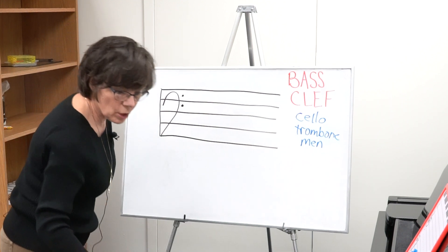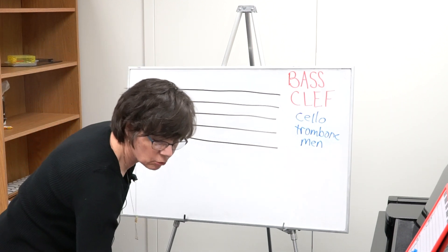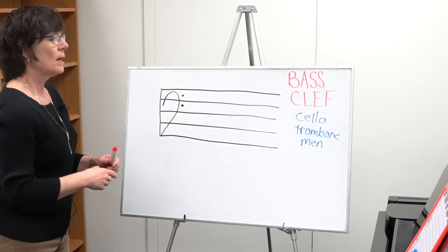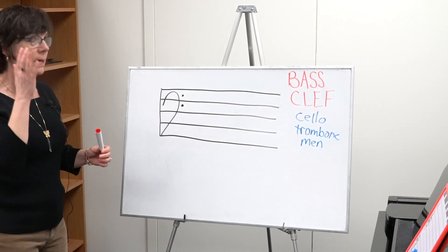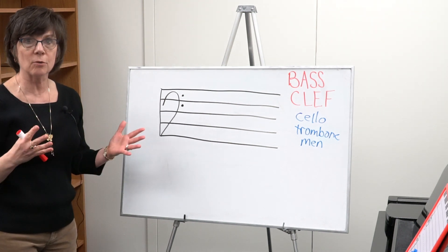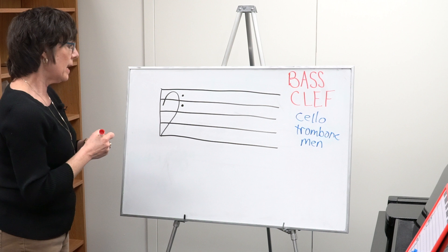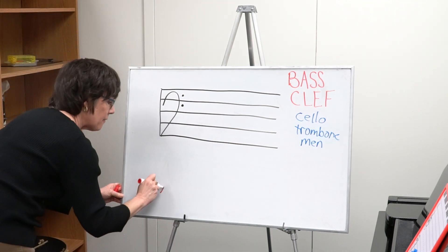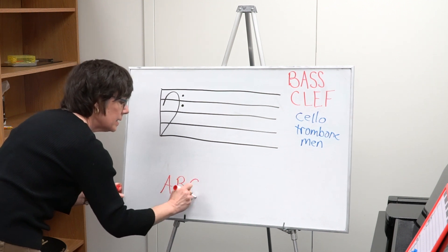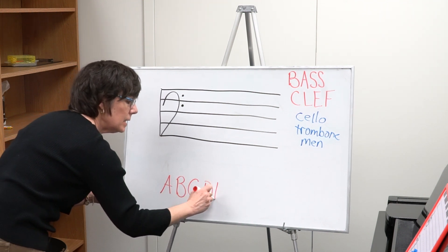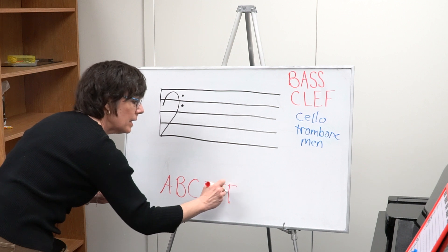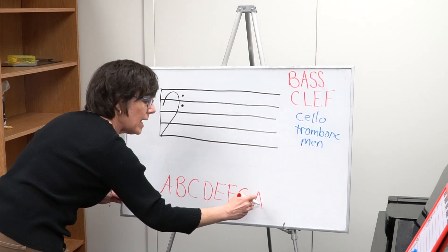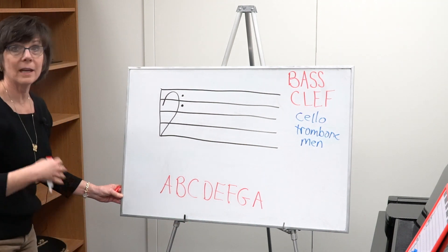The musical alphabet only has seven letters. Our letters repeat when we get to the top, but there are seven letters and we start with A. The alphabet is just like our regular alphabet: A, B, C, D, E, F, and G. And then we start over again with A, and that repeats.